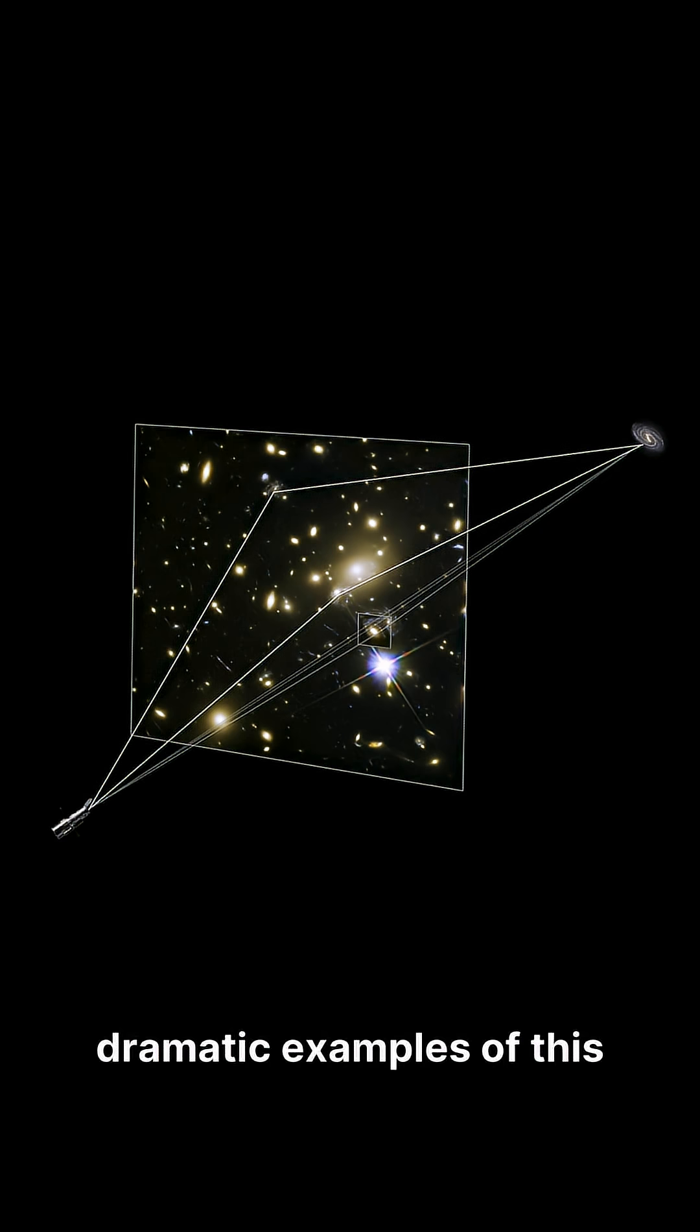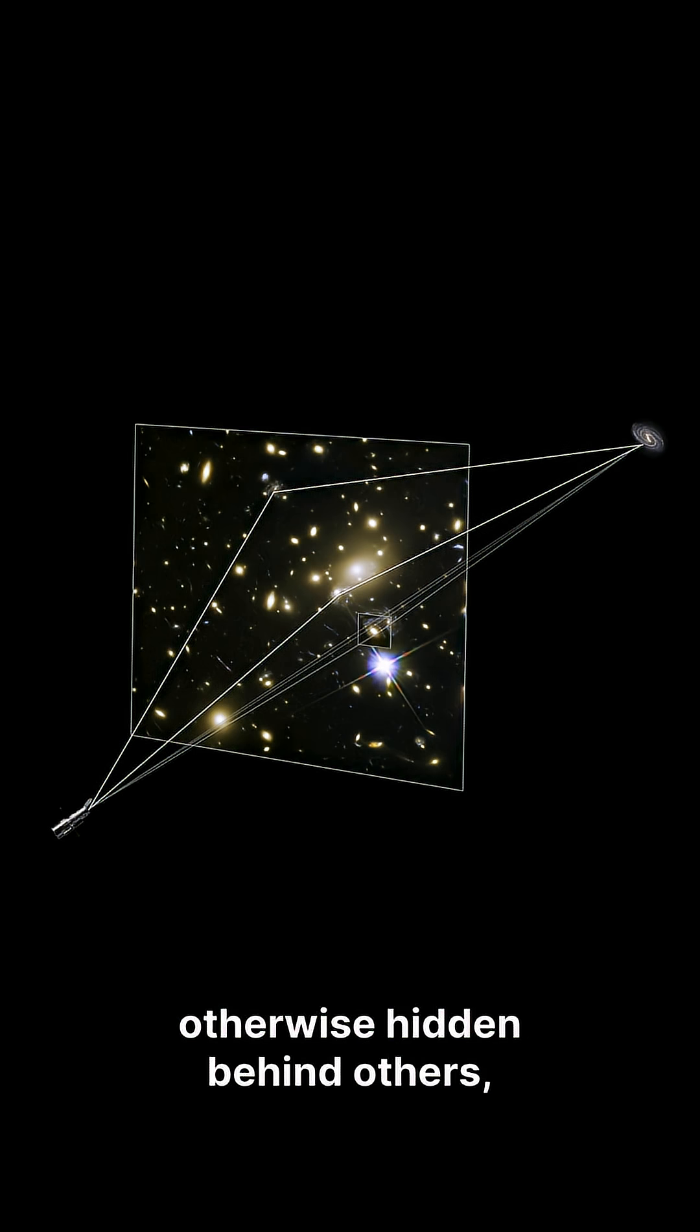One of the most dramatic examples of this is light bending around massive objects. Even though light has no mass, it still follows the curves in spacetime. This effect, called gravitational lensing, allows us to see galaxies that are otherwise hidden behind others because their light is bent around massive clusters.